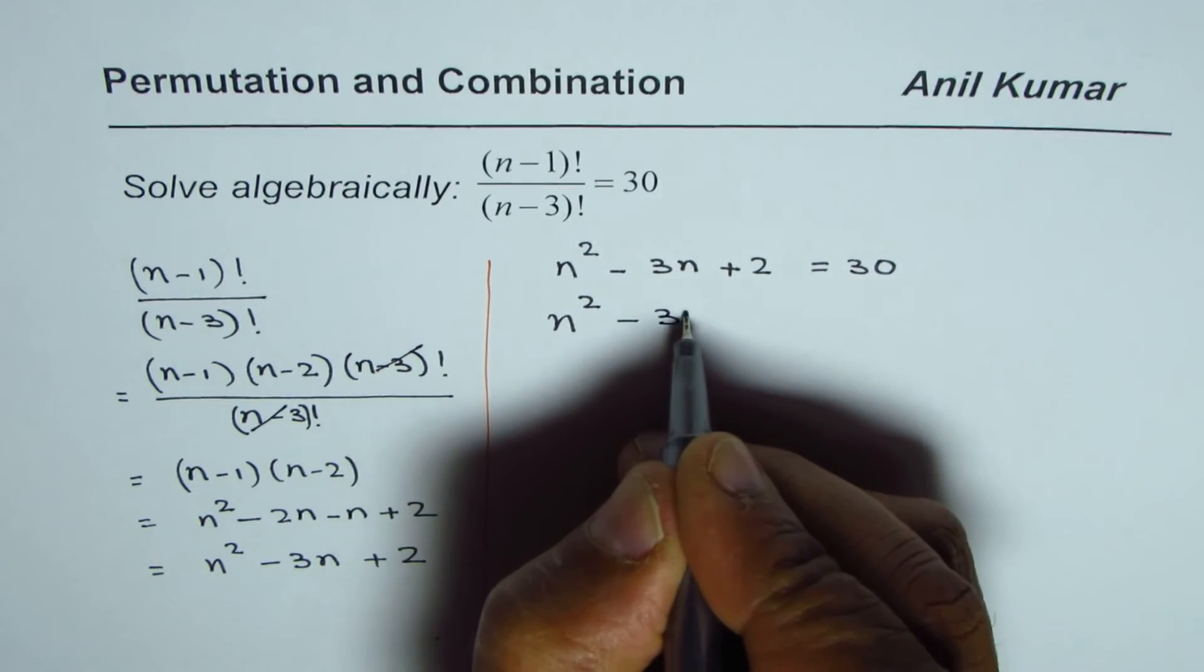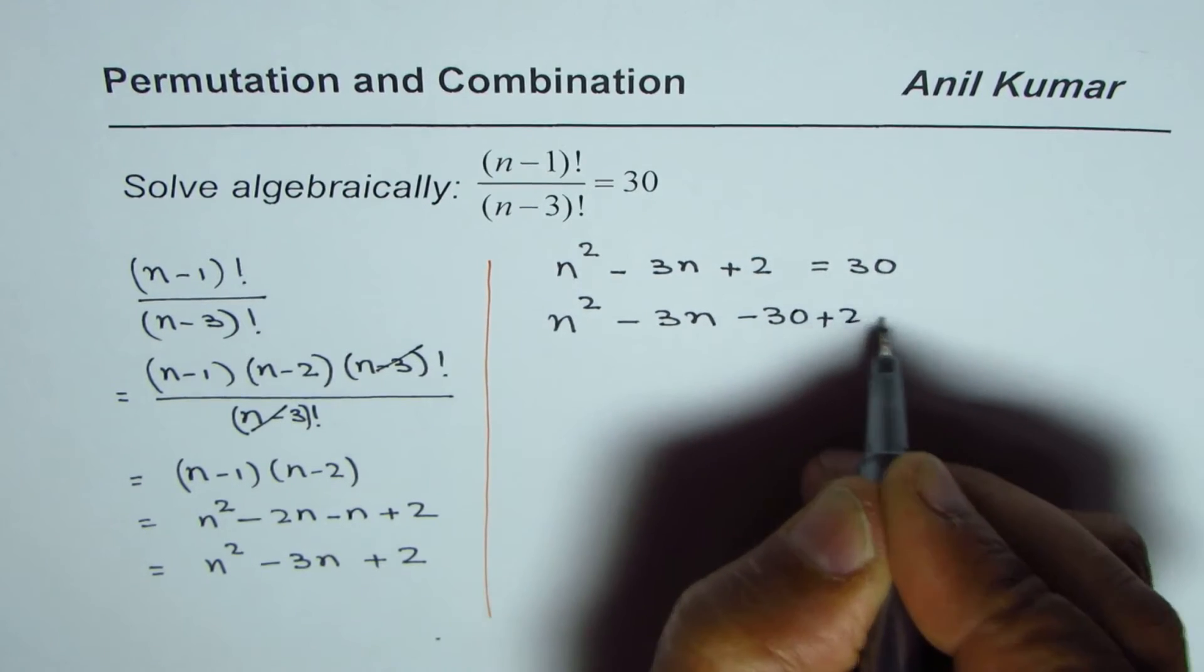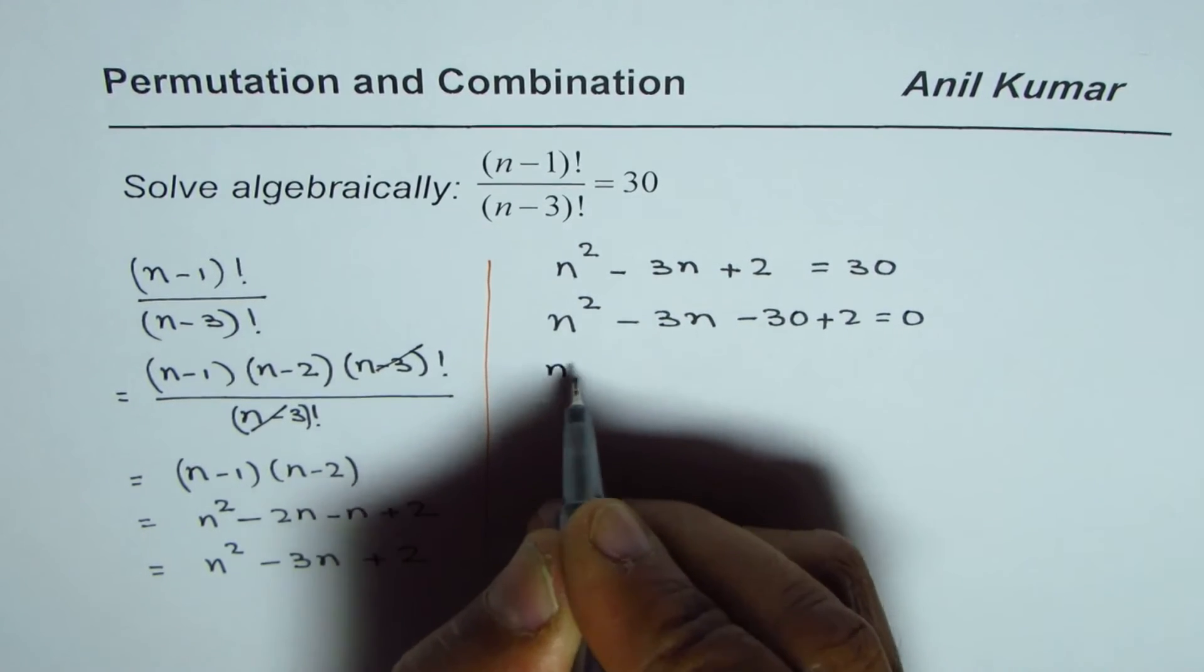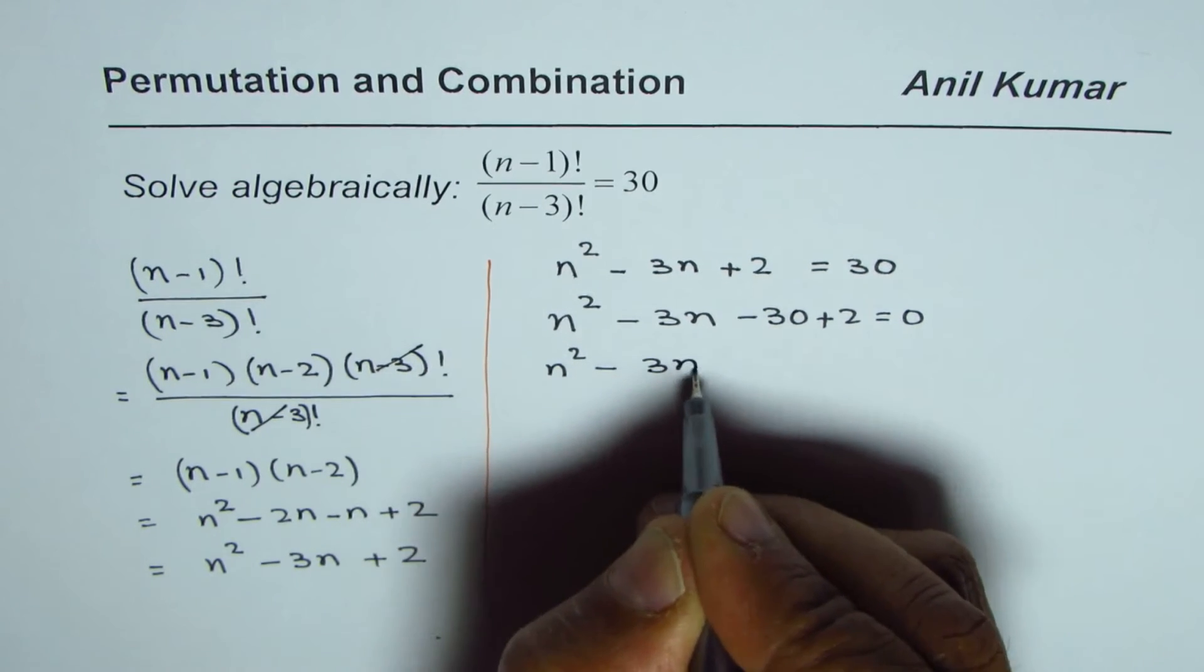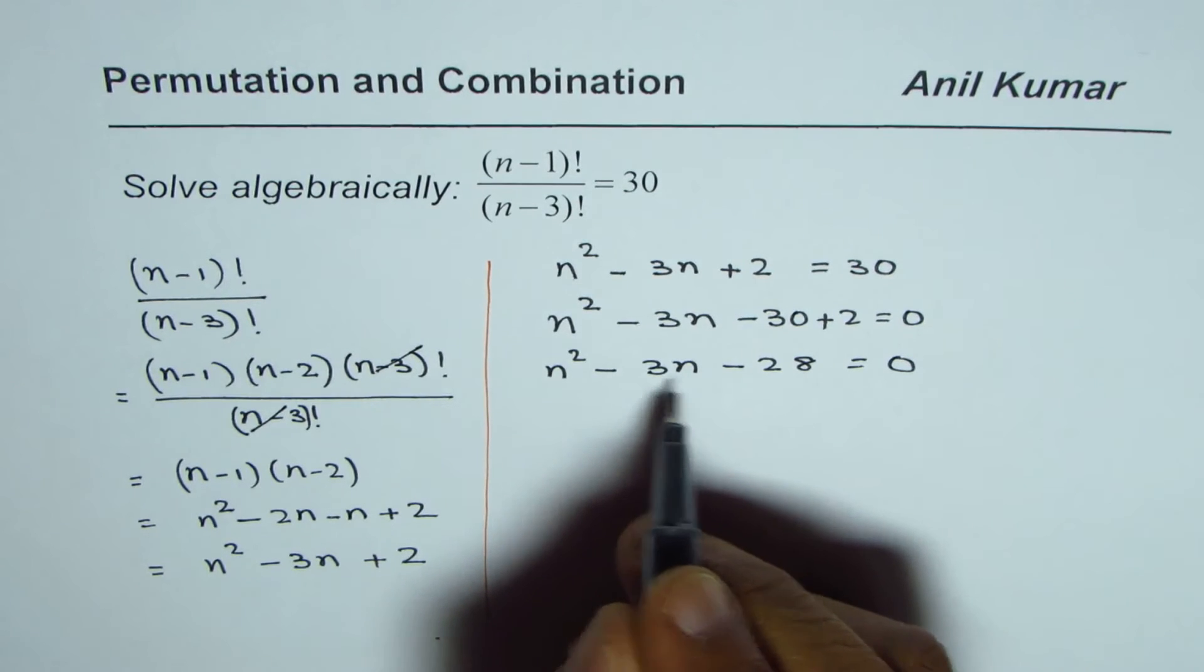Now bring 30 to the left side. You get a quadratic equation which is n² minus 3n minus 28 equals 0. To find n, we can factor this.